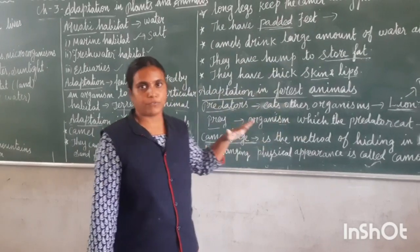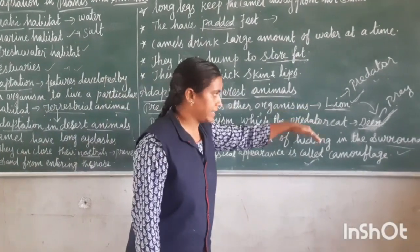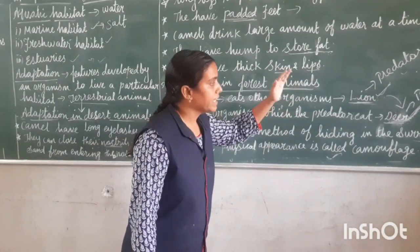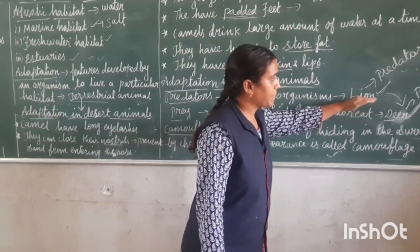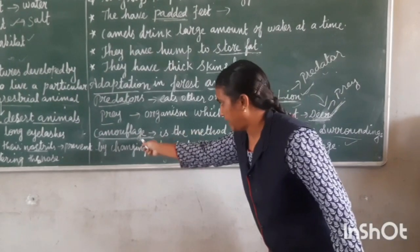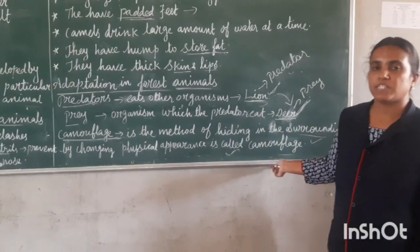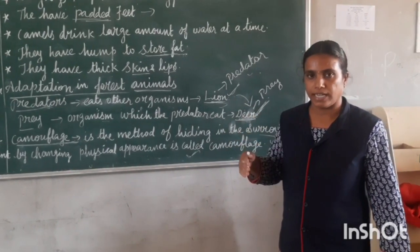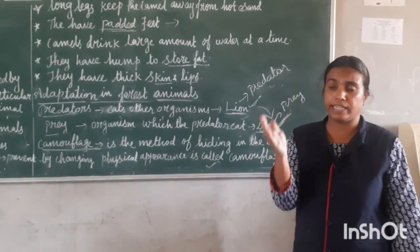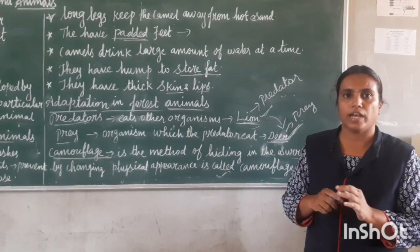We also learned about adaptation in forest animals. Predators eat other organisms — example, lion. Prey is the organism the predator eats — example, deer. Camouflage is the method of hiding in surroundings by changing physical appearance. Chameleon changes its body color to escape from enemies. Tiger's skin color matches dried grass helping it hunt. I hope you all understood. Thank you, have a nice day.